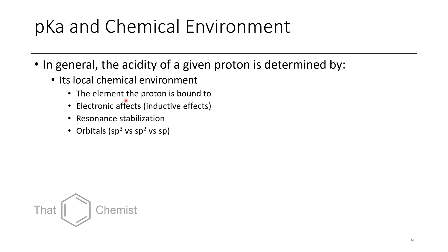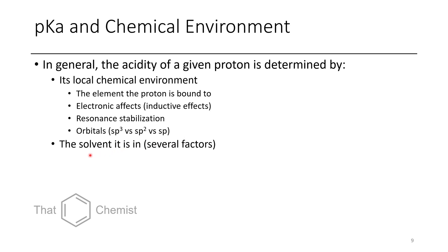The acidity of a proton is determined by several factors. One is its local chemical environment — basically anything that causes the proton to be influenced at all. This could be affected by the element the proton is bound to, electronic effects including inductive effects from electron density further away, steric effects, resonance stabilization of the resulting anion once the proton has been deprotonated, as well as the orbital type — whether there's an sp³, sp², or sp C–H bond. Another relevant factor is the solvent, which has several complicating effects including the dipole moment or polarity of the solvent.